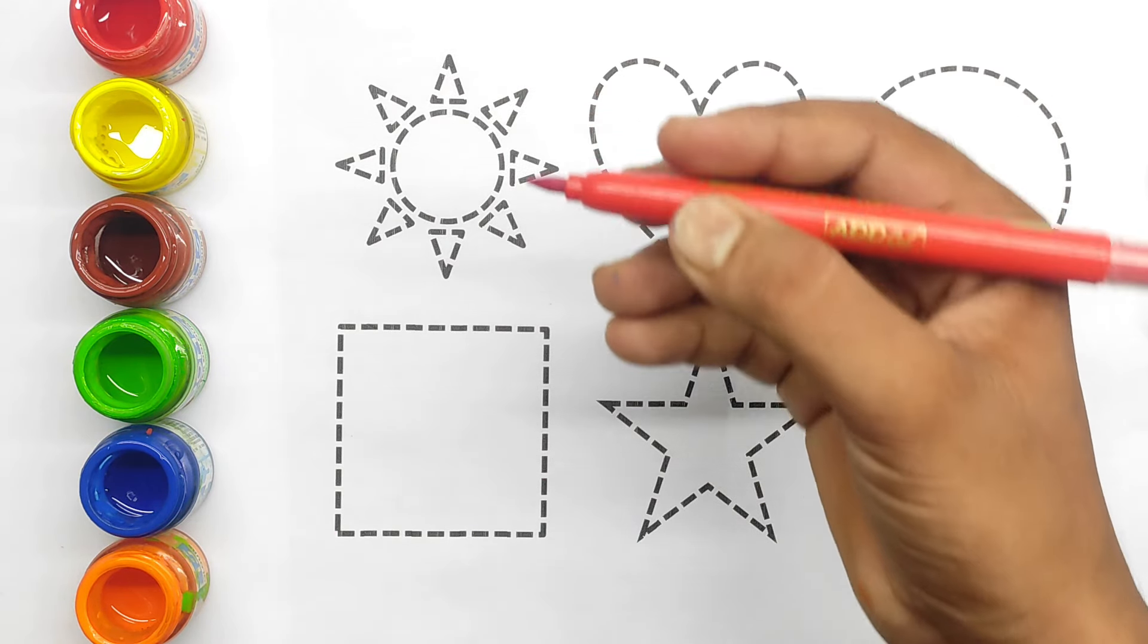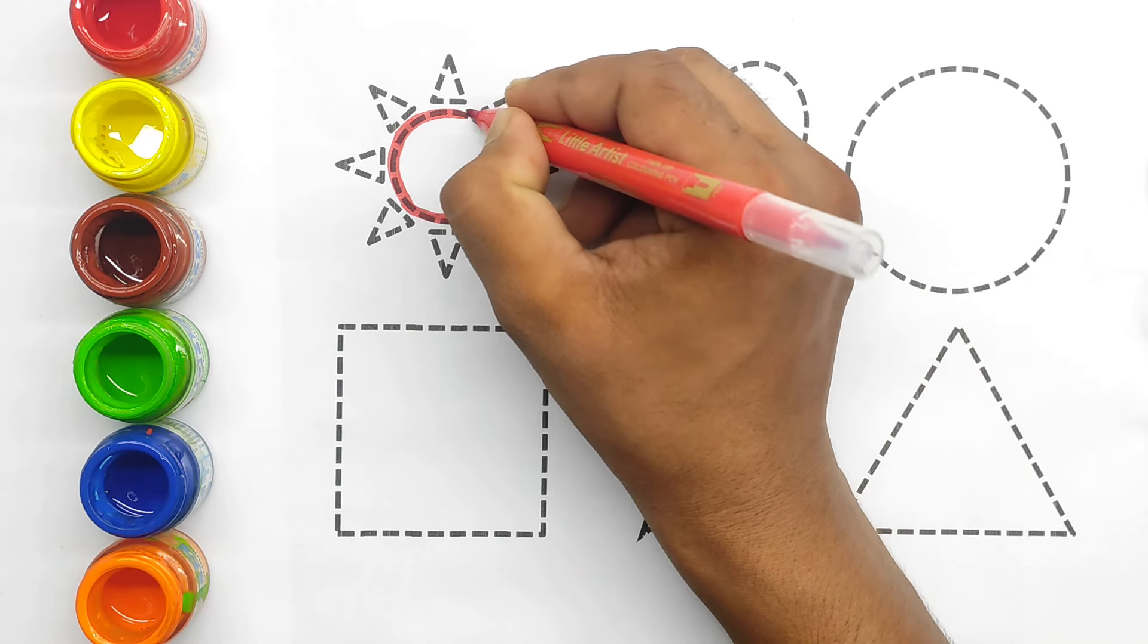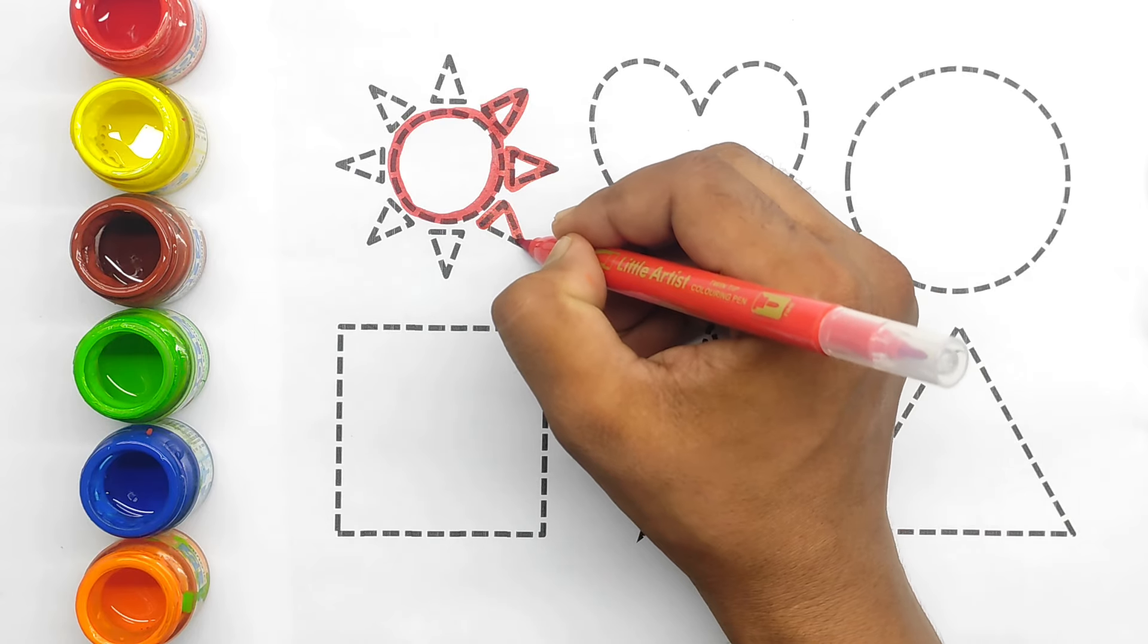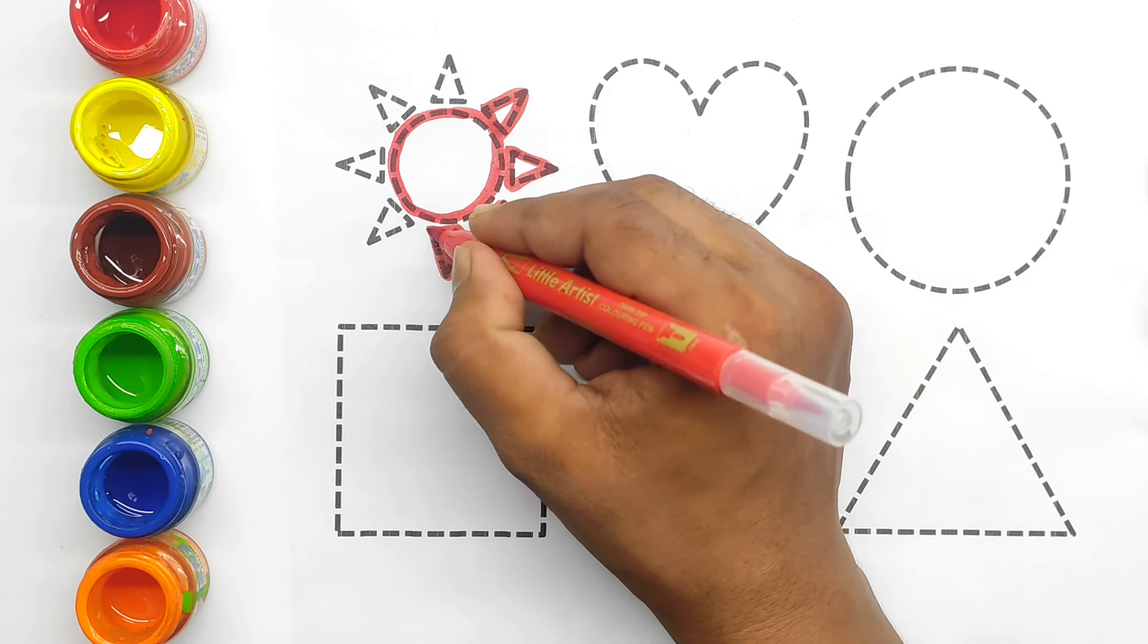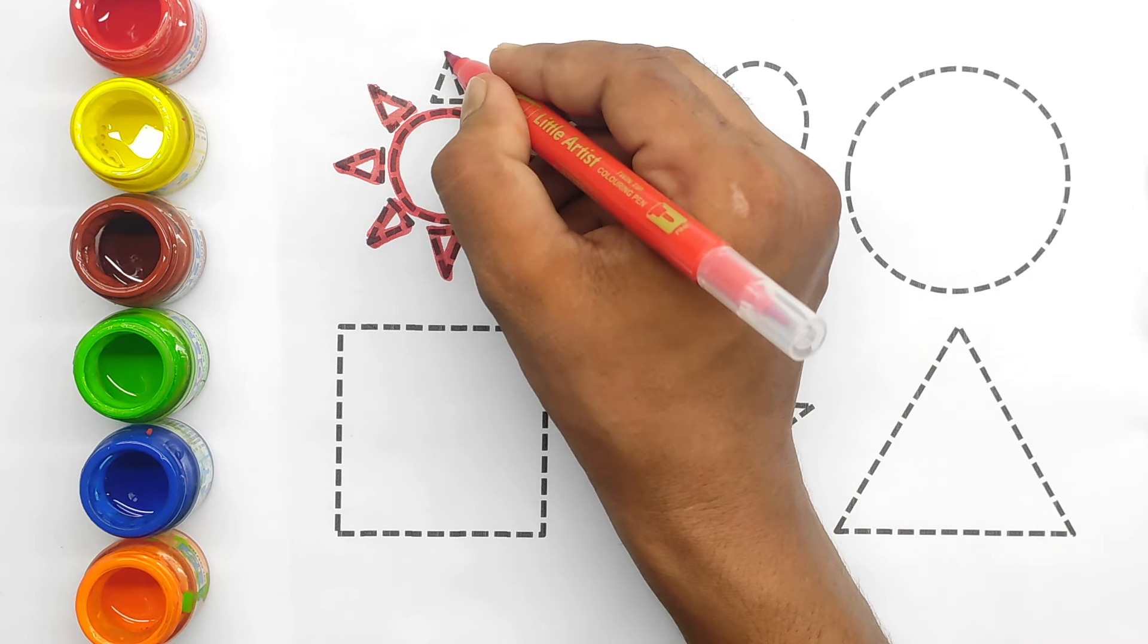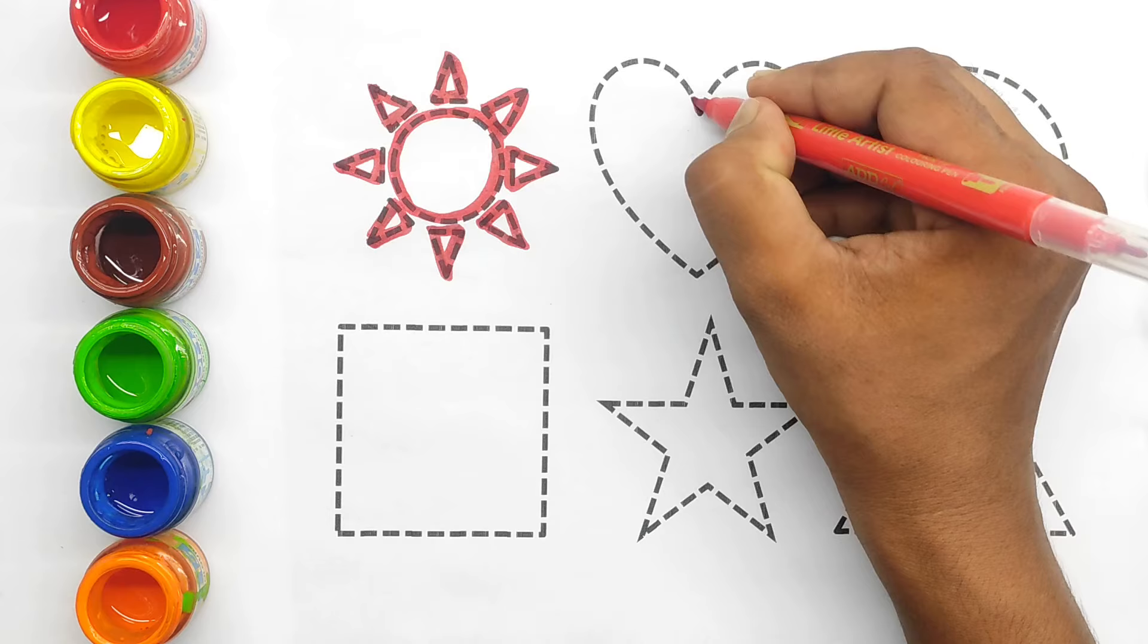This is red color. Sun. This is sun, a 2D shape. Sun.